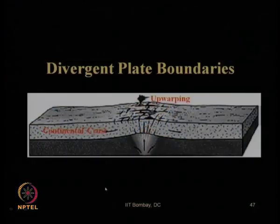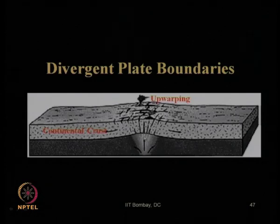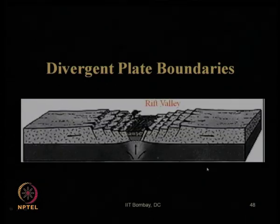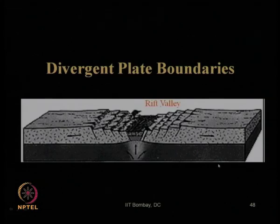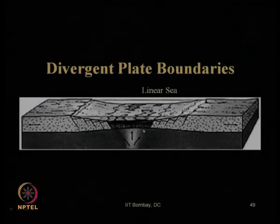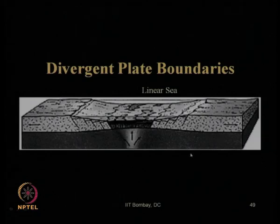Looking at this picture again, two plates move outward as shown by the arrows, lava comes out, and this is continental crust divergent plate movement with upwarping occurring here. It creates a rift valley once the two plates move away. And sometimes that valley in the future, if filled with water, can form a linear sea — so divergent plate movement can create a water body or sea.